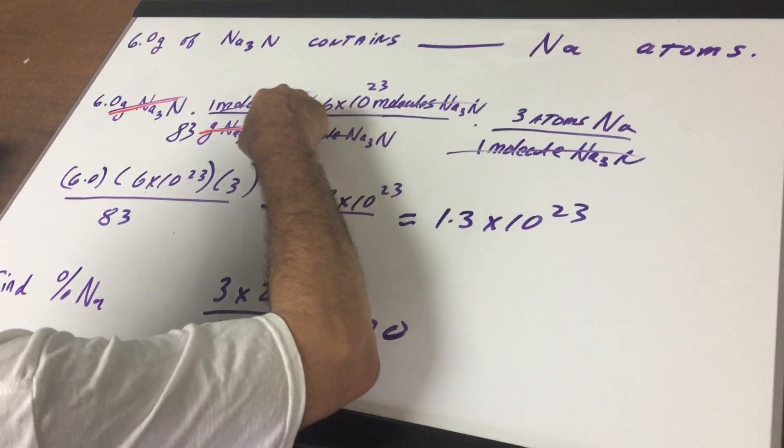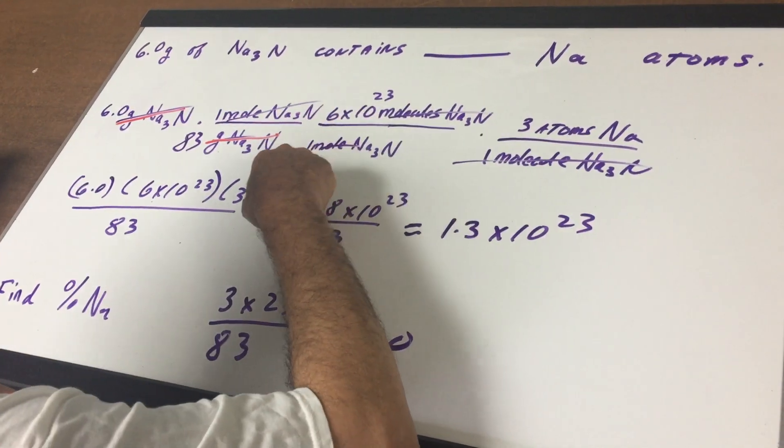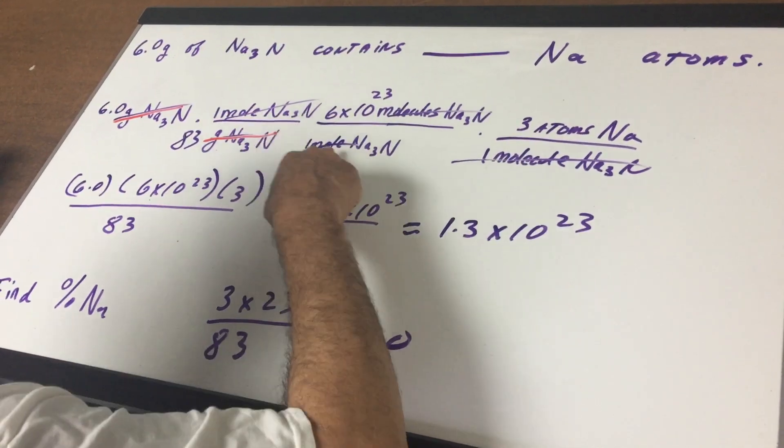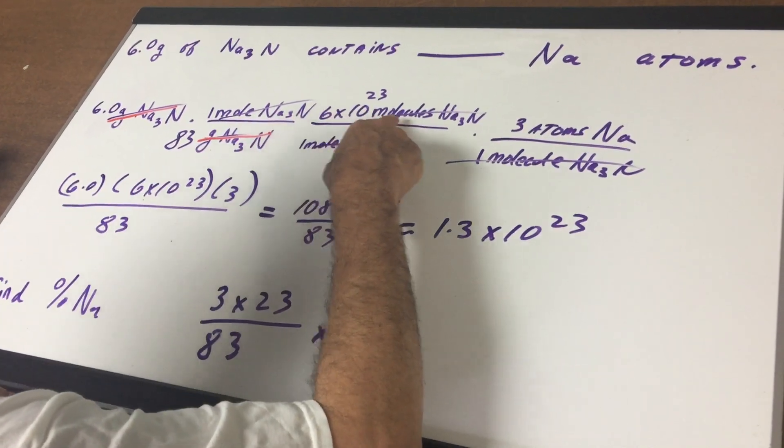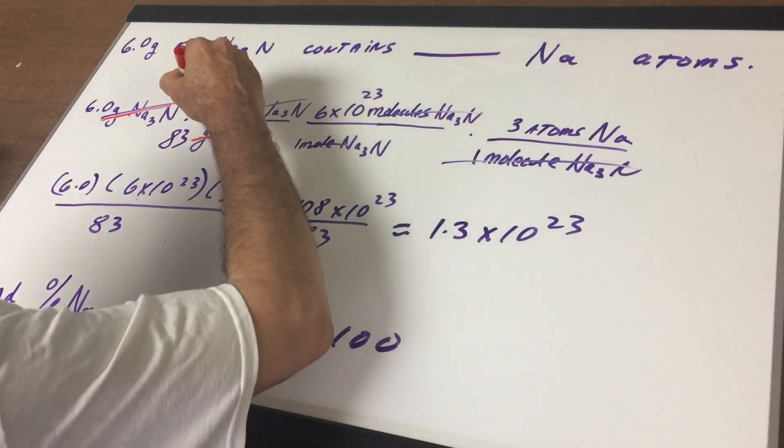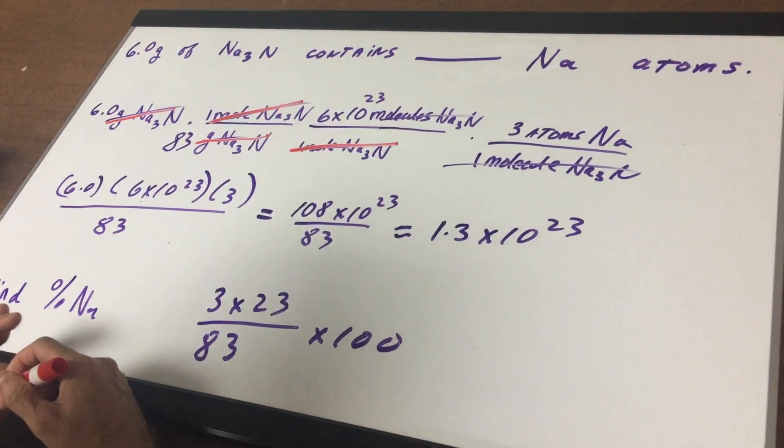Then you notice that this whole thing, think of it as a big molecule. So in one mole, notice moles are on the bottom, contains 6.02 times 10 to the 23rd molecules of Na3N. Even though if something's ionic, we don't technically call it a molecule,